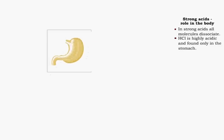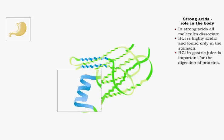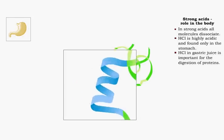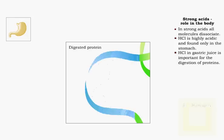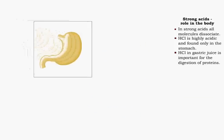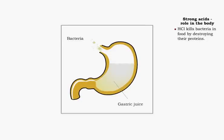Gastric juice, however, contains hydrochloric acid, a strong acid. It is important for the digestion of proteins. Hydrochloric acid also kills bacteria ingested with food by destroying proteins required for their existence.